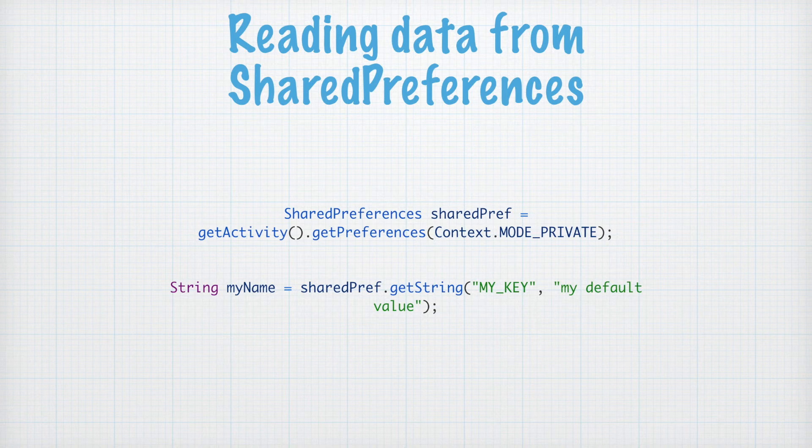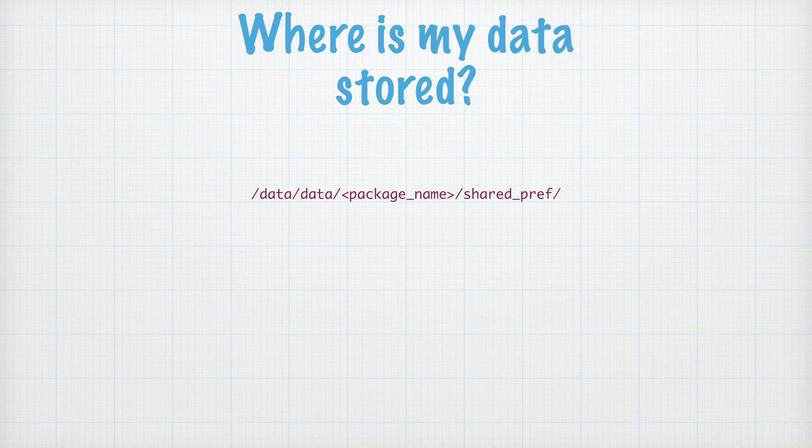To read a string value: String myName = sharedPref.getString(...). If you want to read a boolean, use getBoolean(). Similarly, there are other methods available in the SharedPreferences class which you can refer to via the documentation.